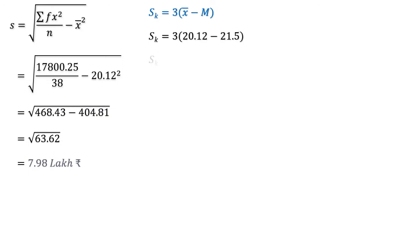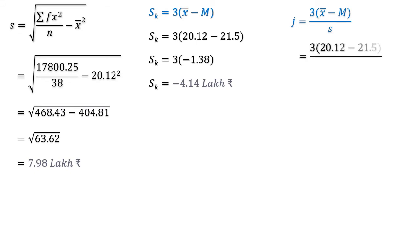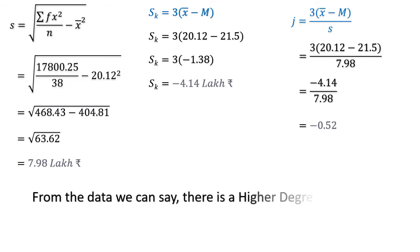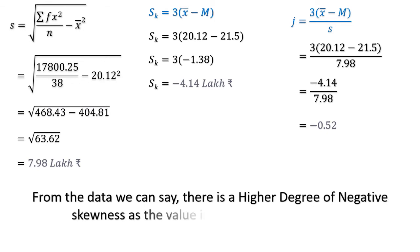x̄ is 20.12, M is 21.5, so 3 × (−1.38) = −4.14 lakh rupees. The type of skewness is negative because the answer is negative. The coefficient of skewness is 3(x̄ − M) / s = −4.14 / 7.98 = −0.52. From the data the skewness is negative and near to −1, so there is a higher degree of negative skewness.